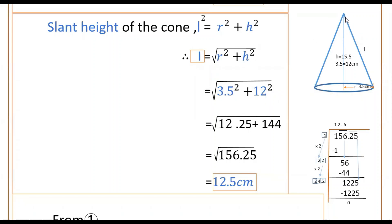To find the slant height of the cone: the height of the cone h = 15.5 − 3.5 = 12 centimeters, and the radius r = 3.5 centimeters. There is a right triangle formed, with a 90-degree angle. By the Pythagorean theorem, l² = h² + r², so l = √(r² + h²) = √(3.5² + 12²) = √(12.25 + 144) = √156.25.